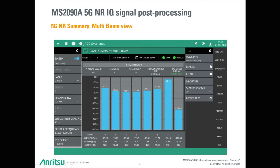In order to initiate an IQ capture of such a 5G new radio signal, you just enter the MS-2090A file menu and tap on the button 5G capture. This operation takes a 40 milliseconds lasting time record of IQ data which is finally saved into the internal memory.